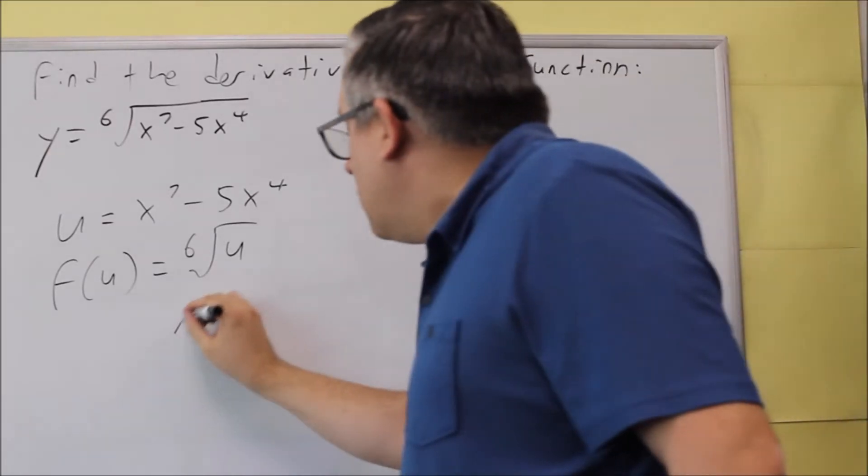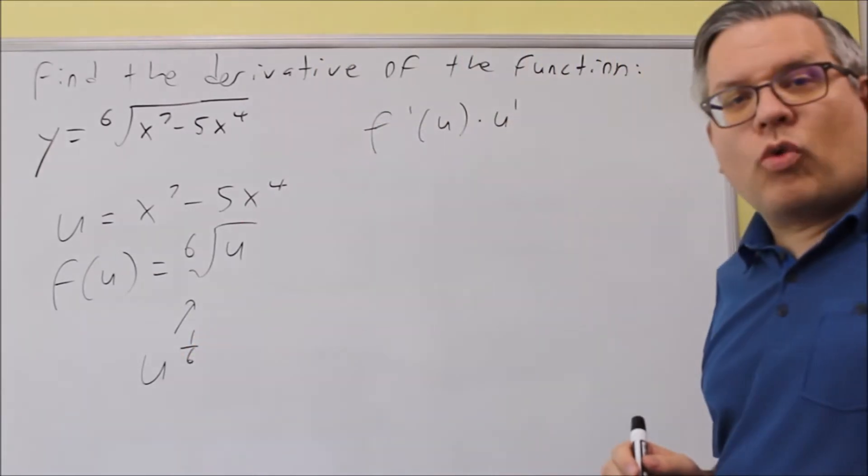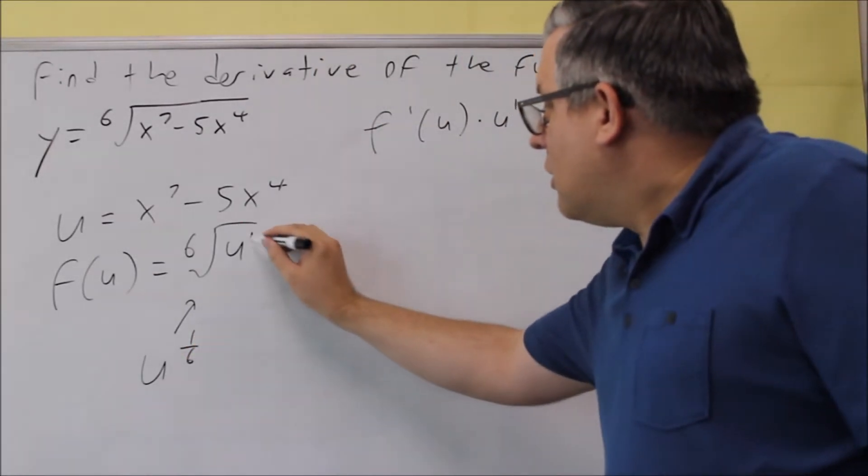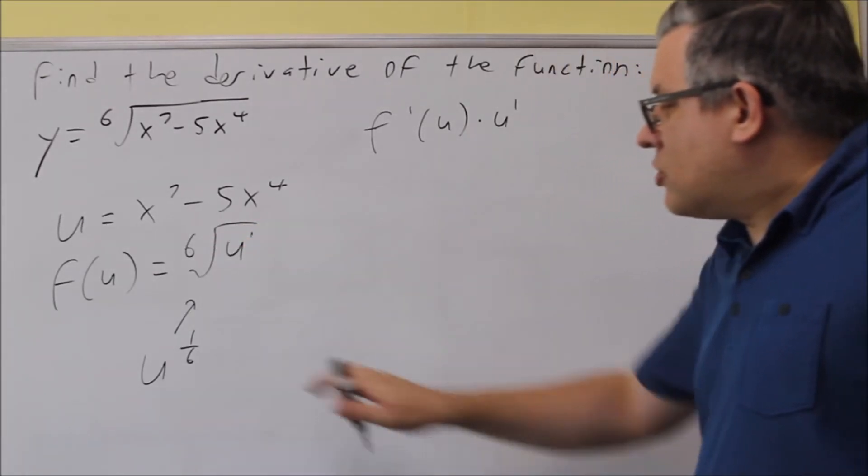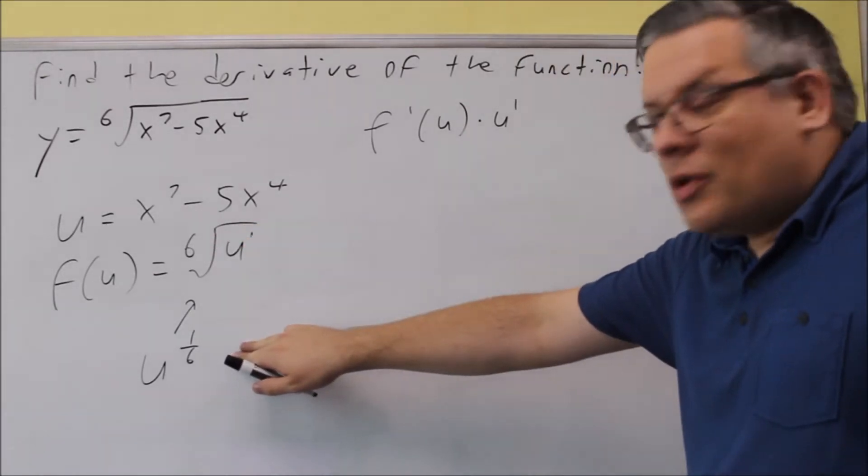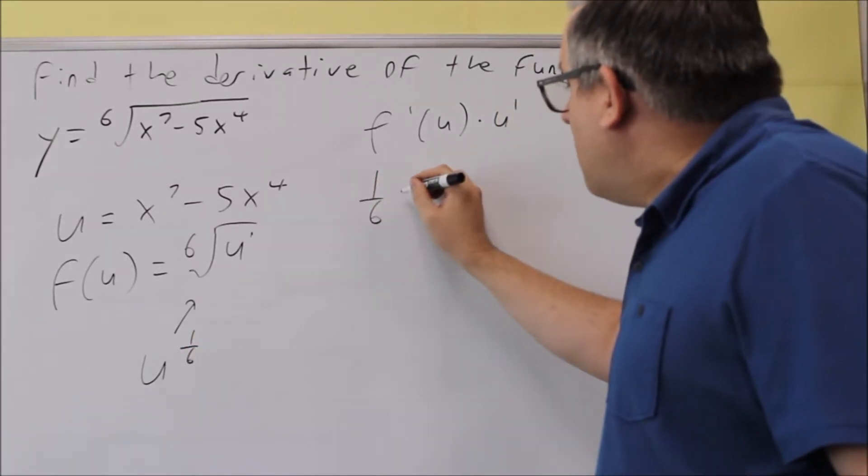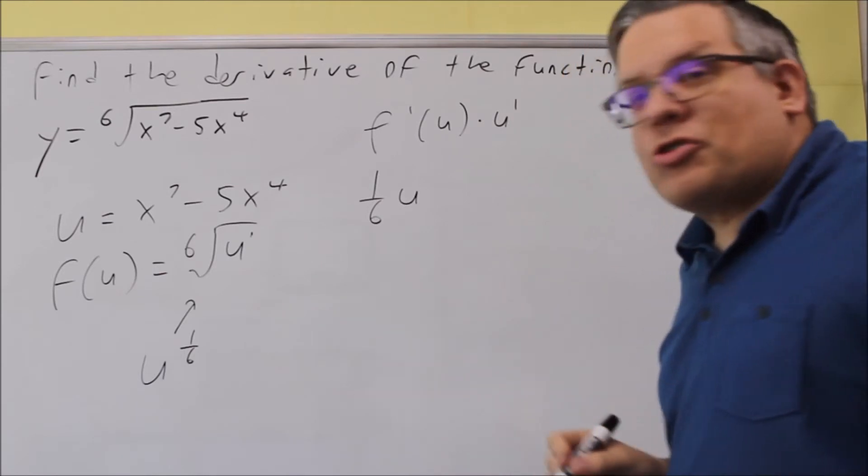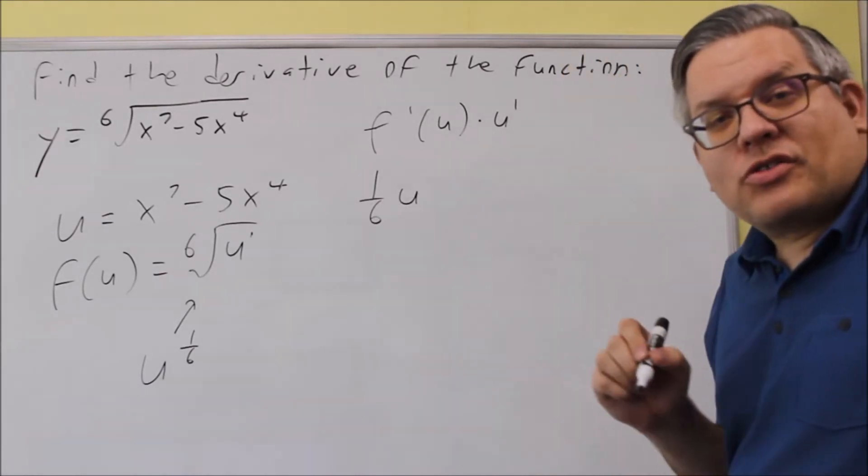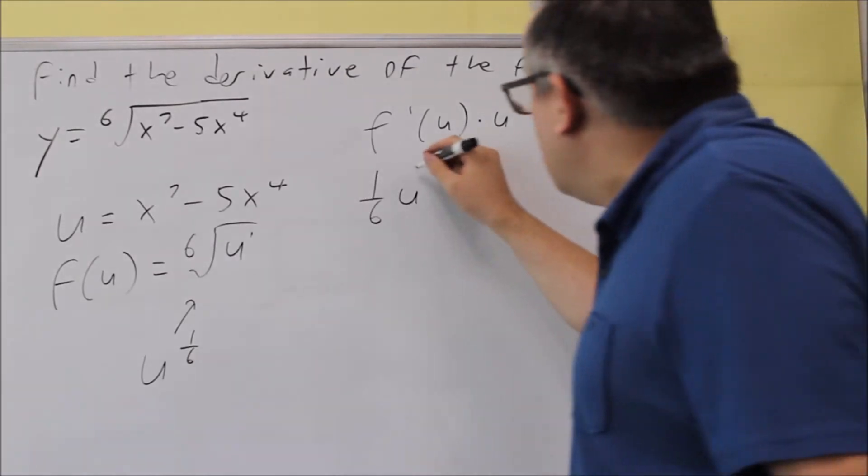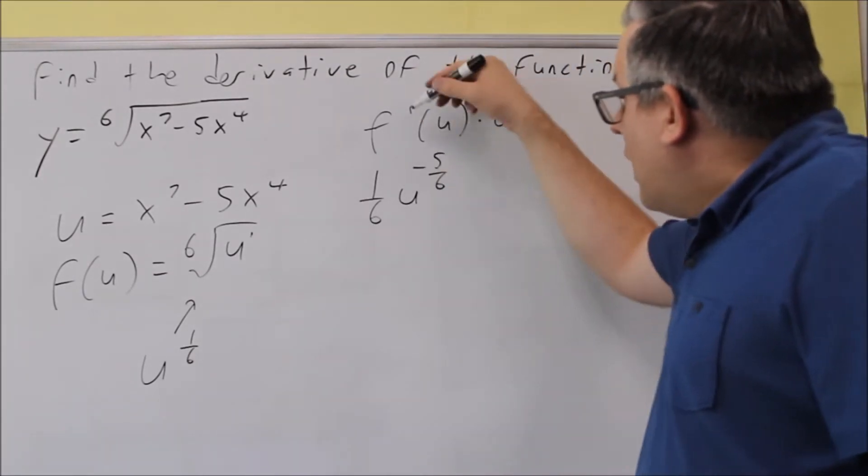Now this right here, you can rewrite that as u to the one-sixth. So if I want to use the power rule on that one, the one-sixth would come down, I have u, and I'm going to subtract one from that. So one-sixth minus one is one-sixth minus six-sixths, giving us negative five-sixths. That's my f prime of u.